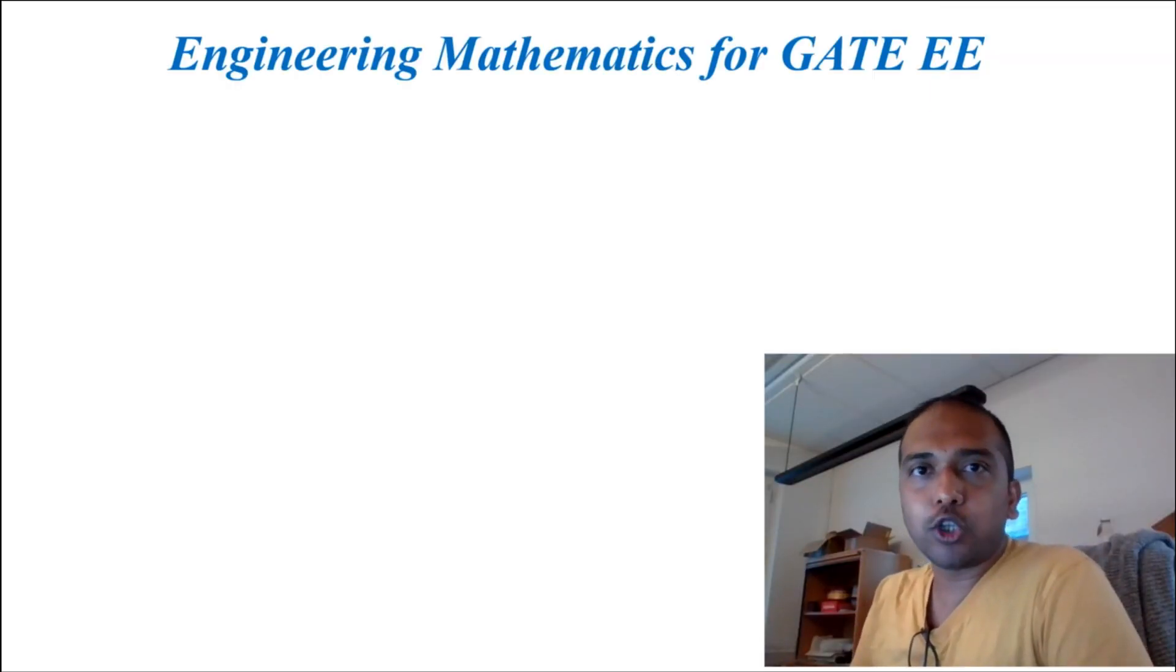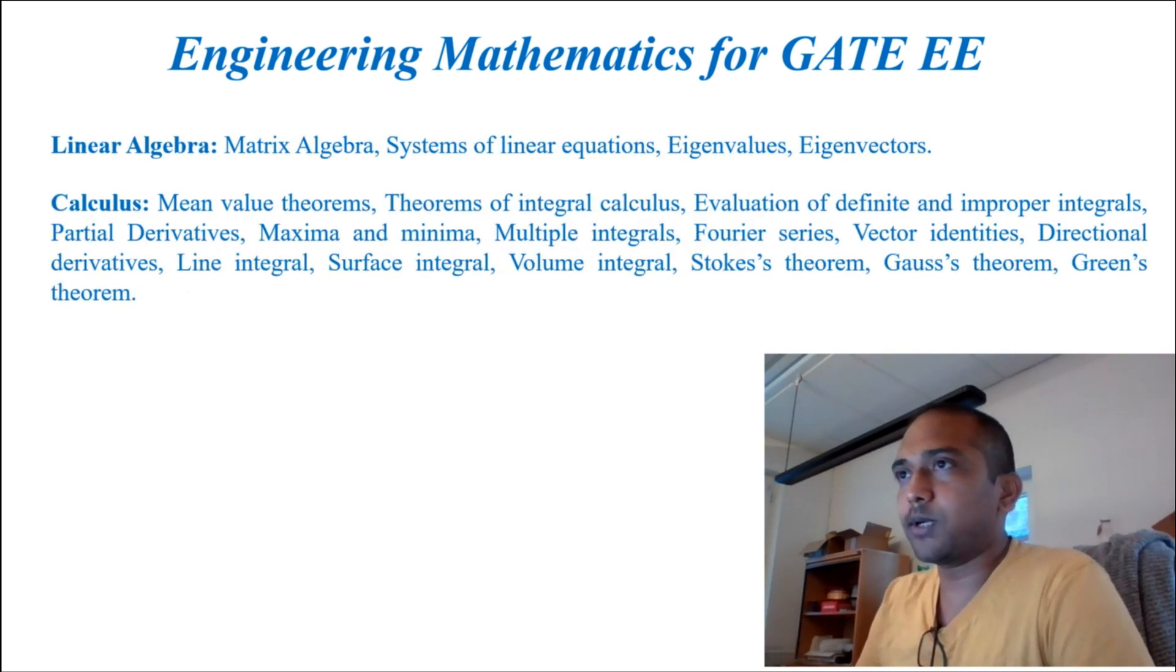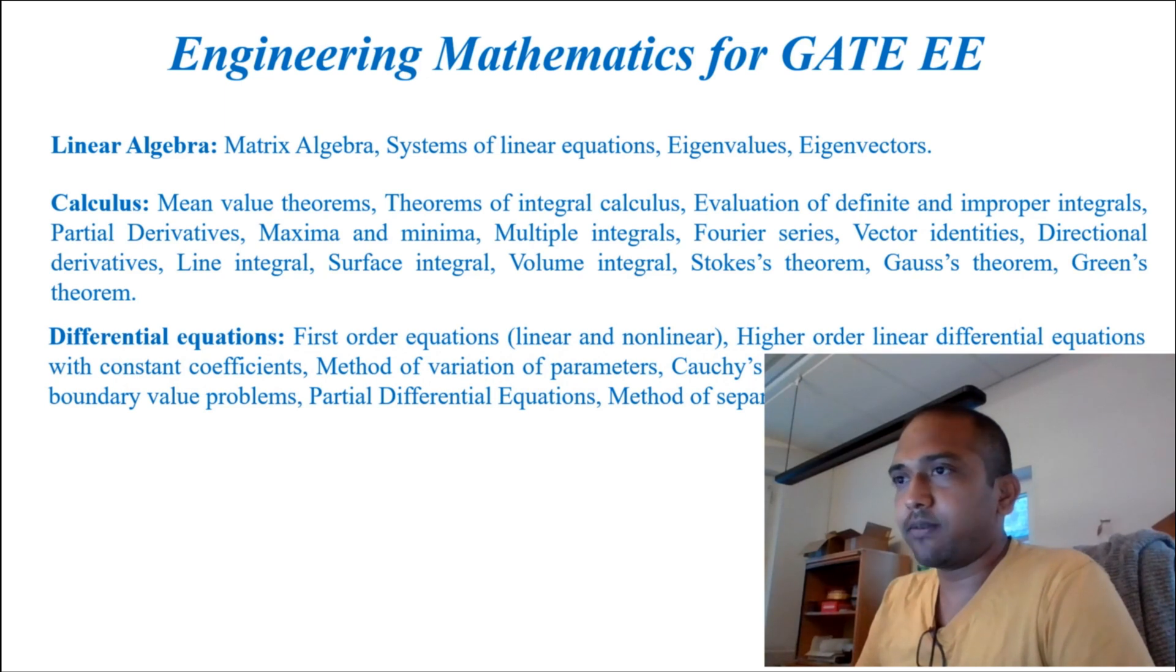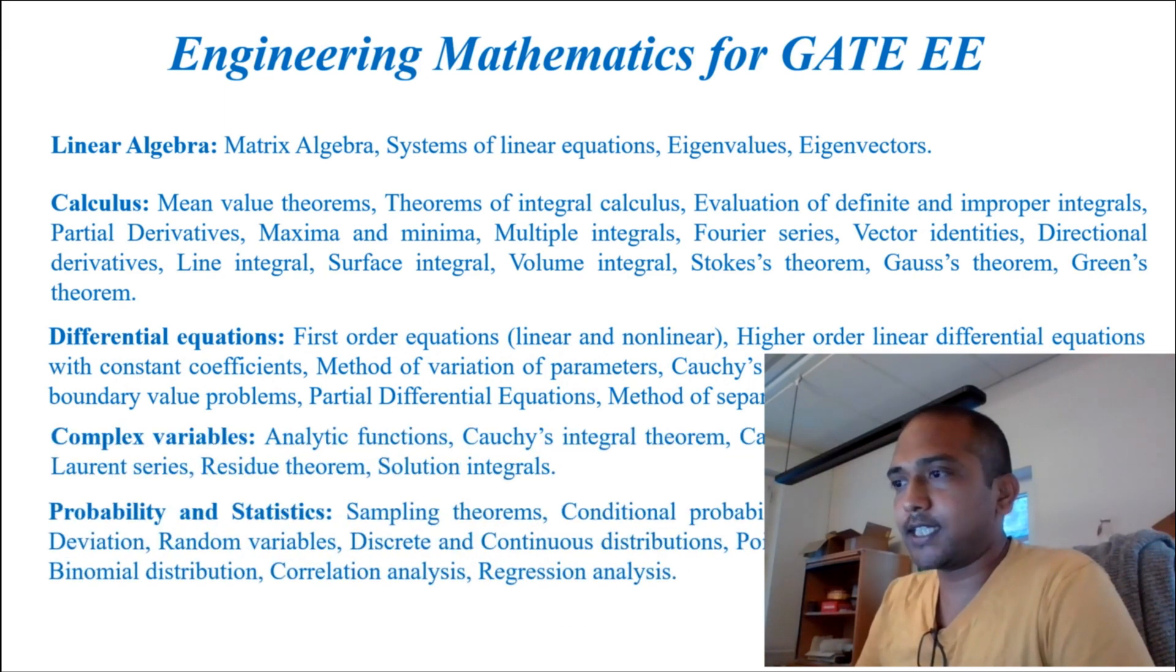Let's look at what are the topics involved in GATE engineering mathematics for electrical engineering. You have linear algebra, then you have calculus, differential equations, complex variables, probability and statistics, and then you have numerical methods. Most of these topics are similar for electronics communication and instrumentation engineering. It's very important for you to study all these topics very well because these are very easy 15 marks. And also, many of the basic and core subjects in electrical engineering are dependent on the engineering mathematics.